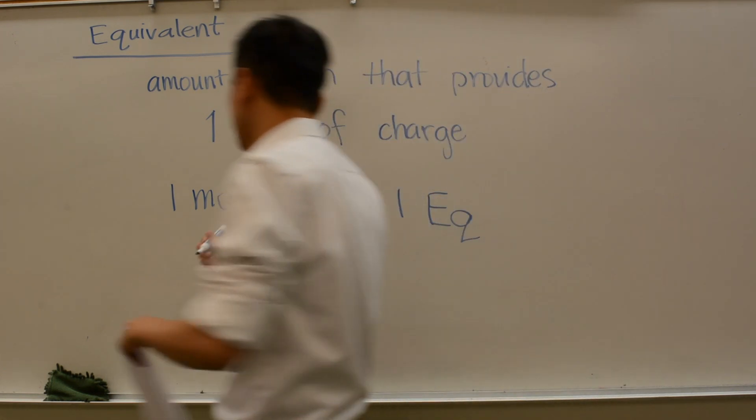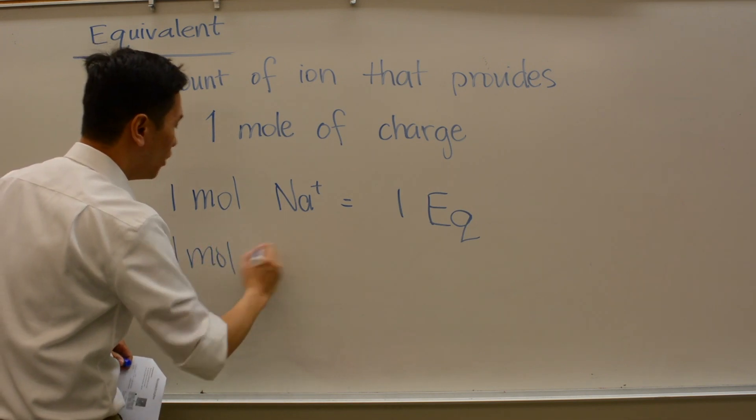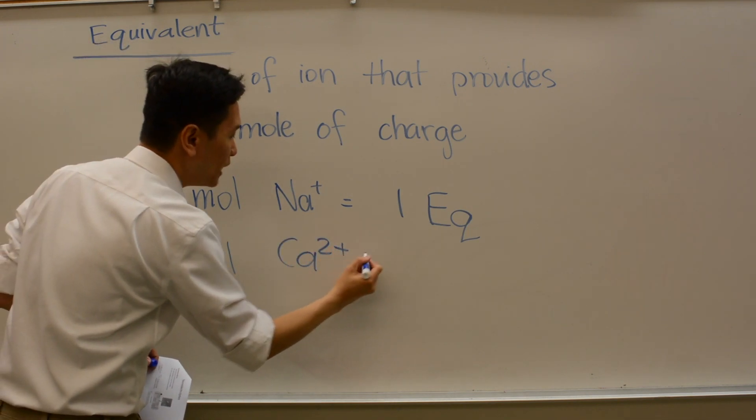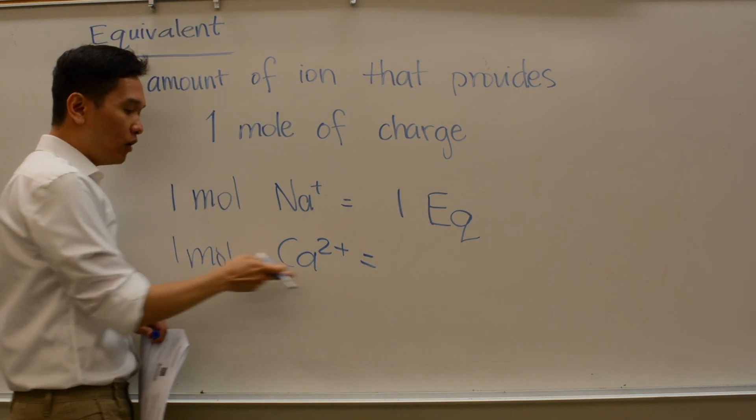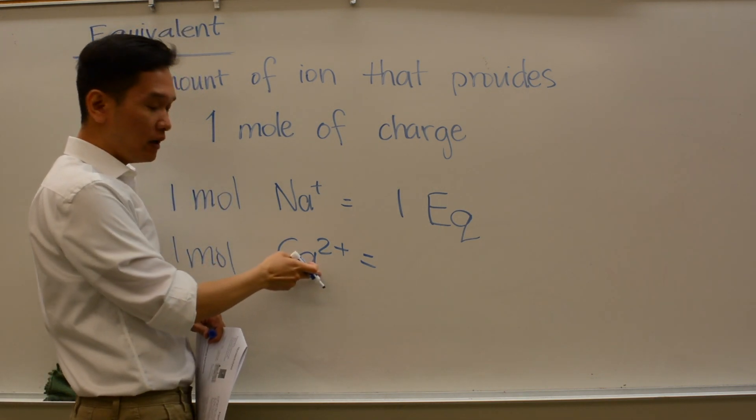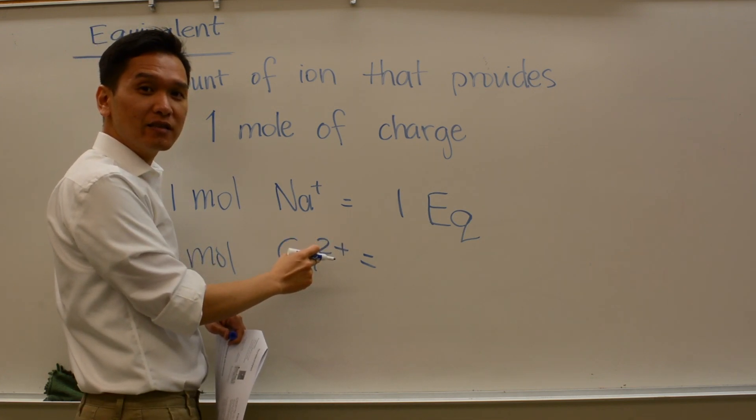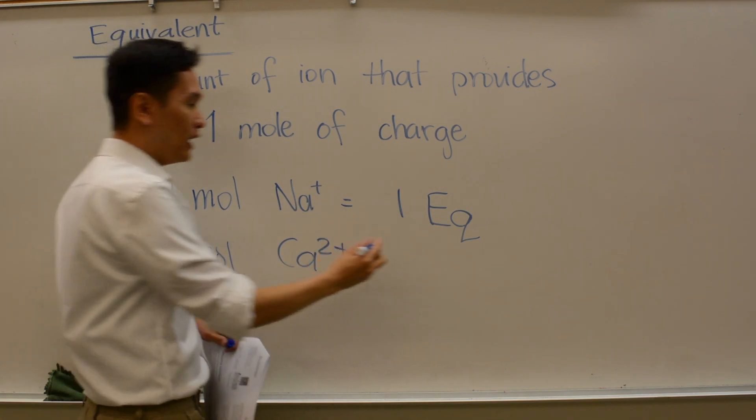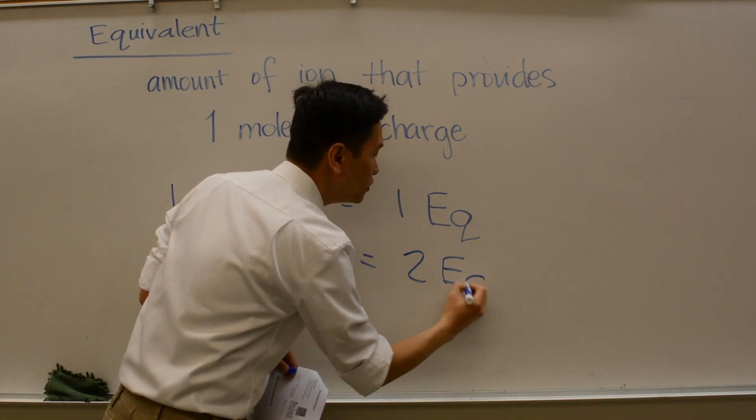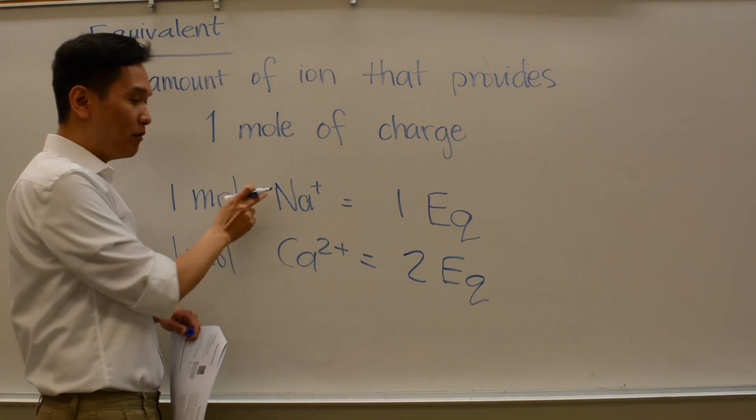For example though, if I say I have one mole of calcium 2+, how many equivalents is that? One mole calcium, for each mole of calcium, there are two charges each, right? Because calcium is a 2+, so this would be equal to two equivalents. It's equal to having twice the amount of sodium.